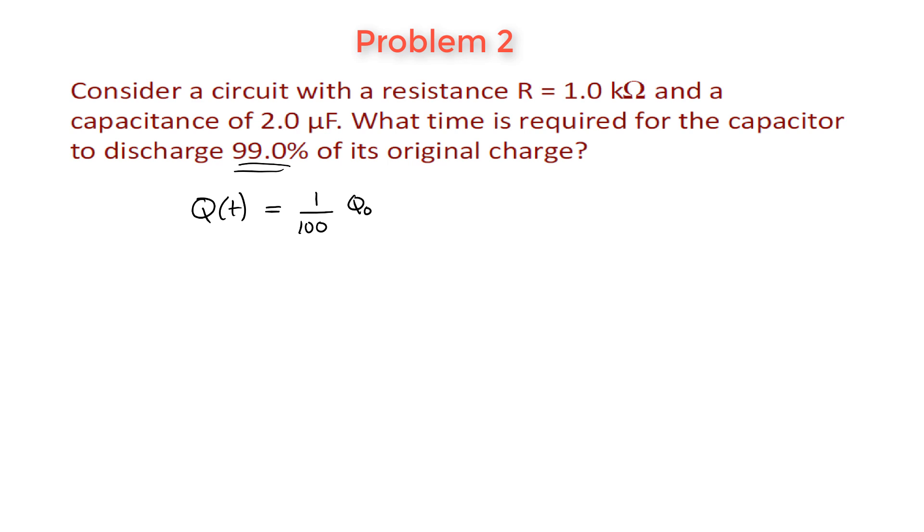So you simply have to, again remember we're just dealing with a charged capacitor which is connected to a resistor and that's it. So this is just a simple discharging system. We have some initial charge over here, Q0. We have our resistance which is 1000. Okay, and we know the capacitance is 2 microfarad.